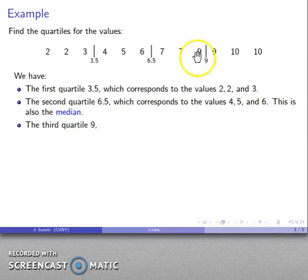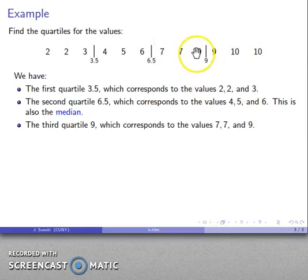The third quartile, that third dividing point, is going to be 9. And that's going to correspond to the values 7, 7, and 9.